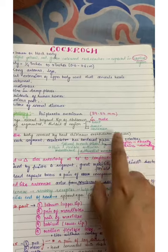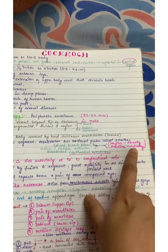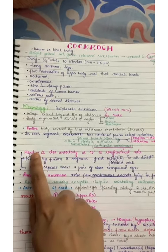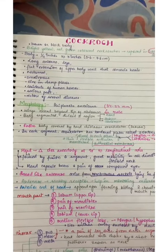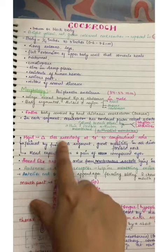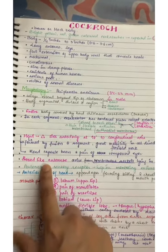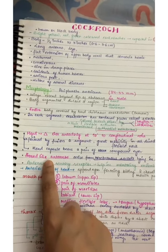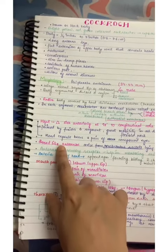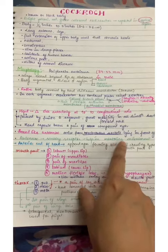The tergites are dorsal and sternites are ventral. Then the head is triangular and the front is 90 degrees to the longitudinal axis, so you can imagine it. Then see, this thread-like antenna arise from membranous socket lying in front of eye.